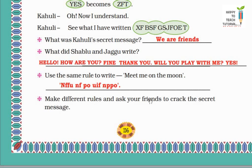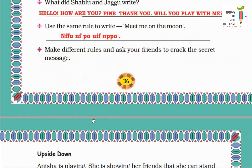Now next: Make different rules and ask your friend to crack the secret message. So here you can make any secret message of your choice, and also make some rules to decode that secret message. And ask your friends. Try to do it yourself.